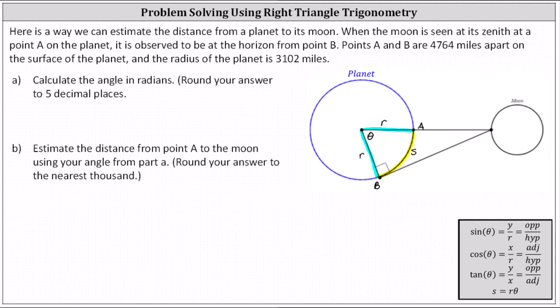Here's a way to estimate the distance from a planet to its moon. When the moon is seen at its zenith at a point A on the planet, it is observed to be at the horizon from point B. Looking at the diagram below,